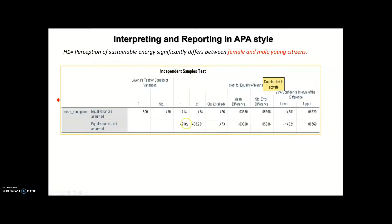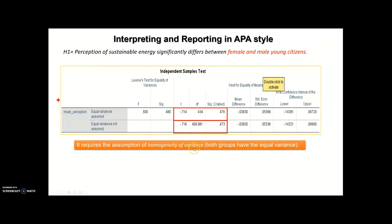This is my inferential statistics table for the independent sample t-test. As you see, there are two kinds of rows here — the first row and the second row. I also have t-value, df, and sig. So which row should I pay attention to? For that reason, first of all, I should look at the homogeneity of variance.